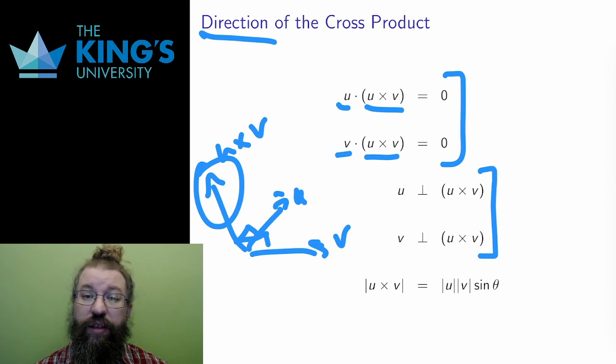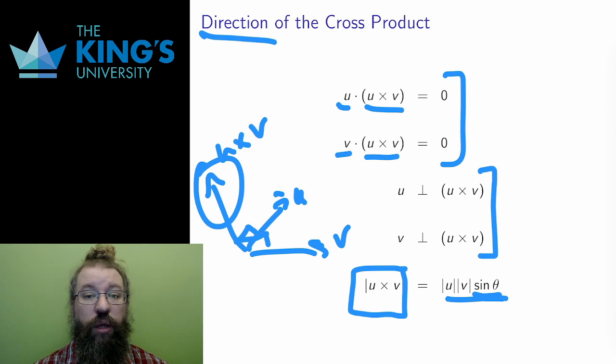The dot product was related to the cosine of the angle between the vectors. The cross product is related to the sine of the angle. Specifically, the length of the cross product, length of u cross v, is equal to the length of u multiplied by the length of v multiplied by the sine of the angle between them.